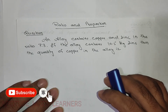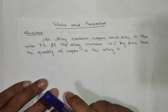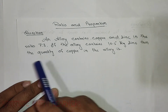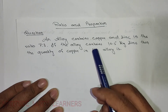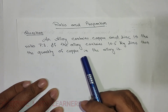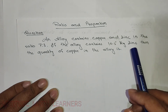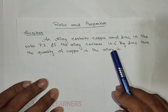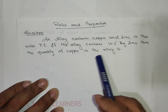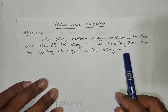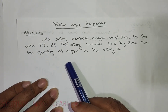Today we have a question related to ratio and proportion. The question is: an alloy contains copper and zinc in the ratio 7:3. The alloy contains 10.5 kg of zinc. We need to find the quantity of copper in the alloy.